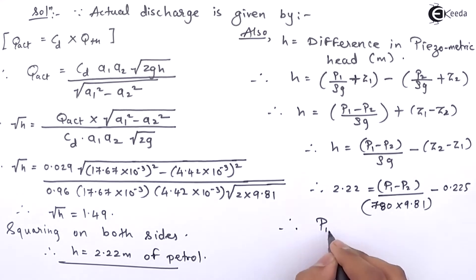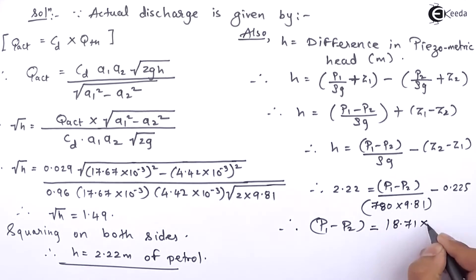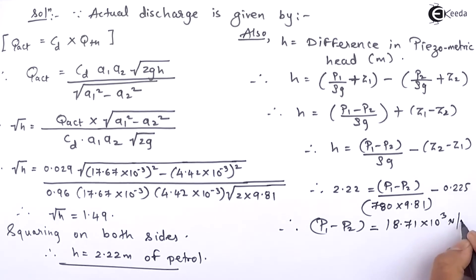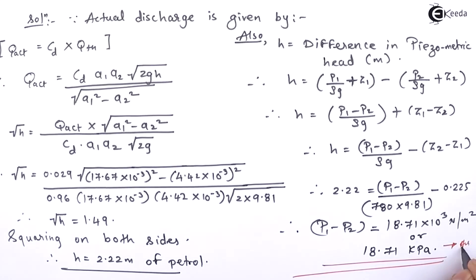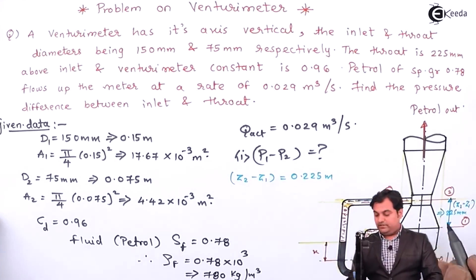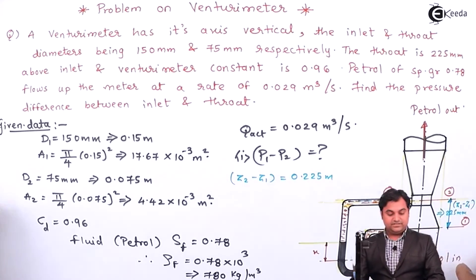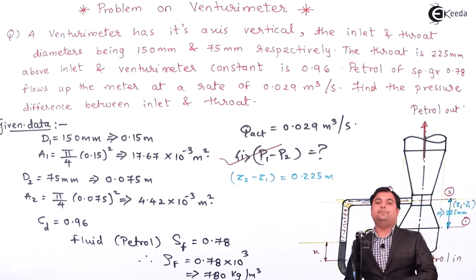From this when I calculate, I will get P1 minus P2 answer as 18.71×10³ Newton per meter square. Dividing this by 1000 will give me 18.71 kilo Pascal. That is the answer. It means the difference in pressure head between the inlet section and the throat section is 18.71 kilo Pascal. And with this, the problem is completed.